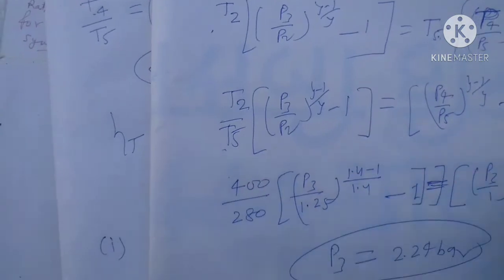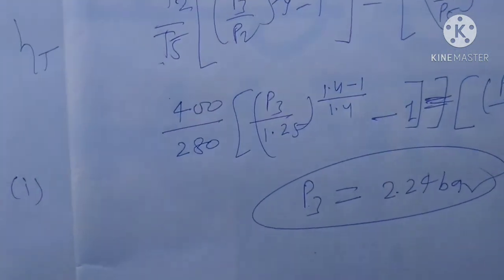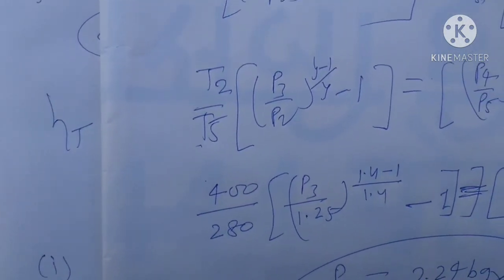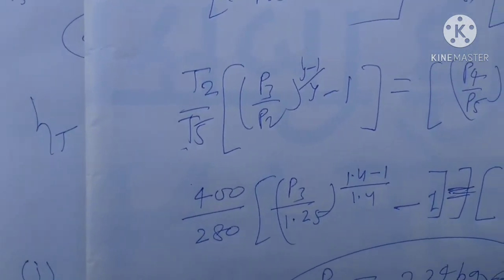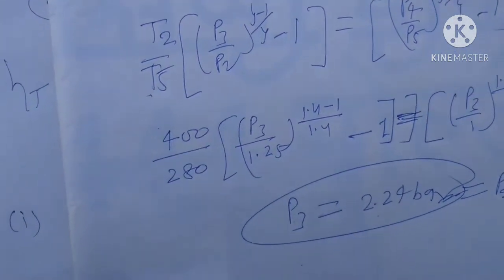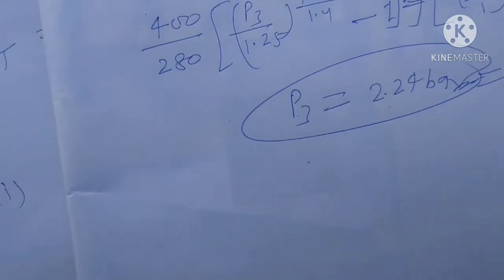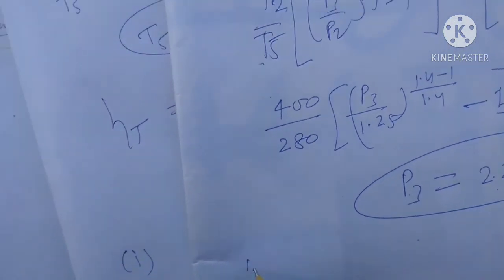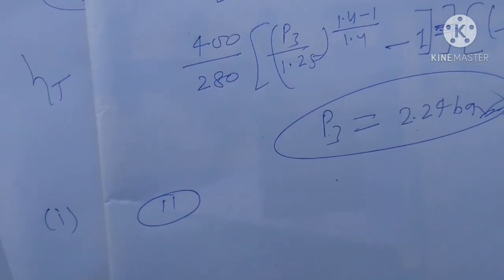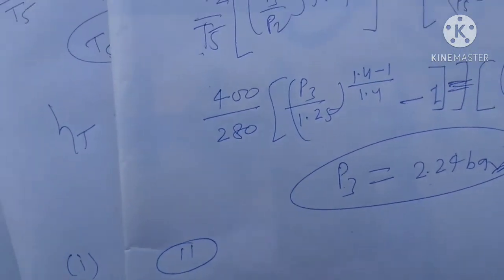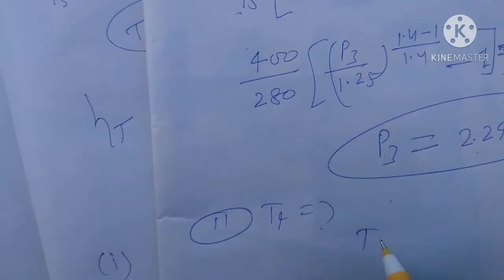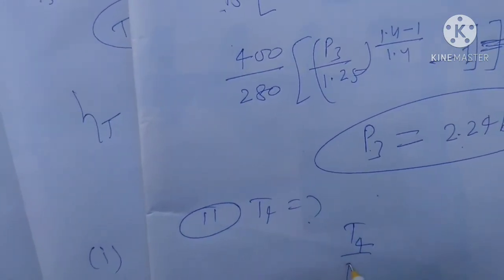So after calculations, P3 = P4 = 2.24 bar. That is the answer to the first question — the compressor discharge pressure. For the second question, we need to find the cooler exit temperature T4, using the isentropic relation: T4/T5 = (P4/P5)^((γ-1)/γ).